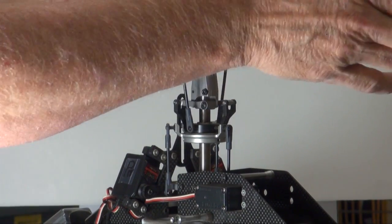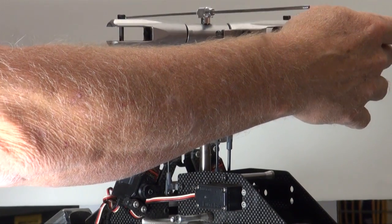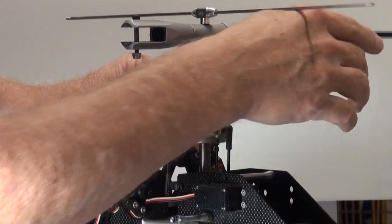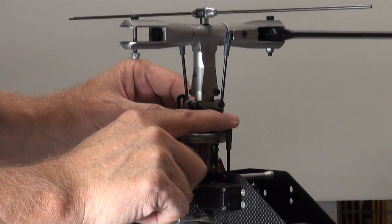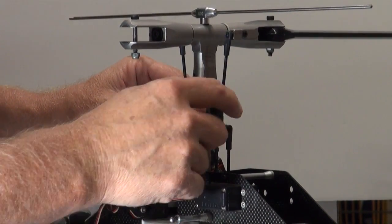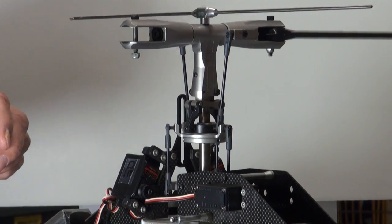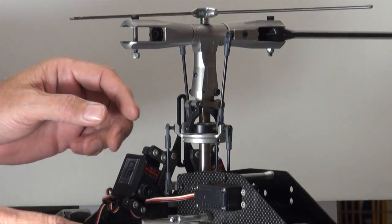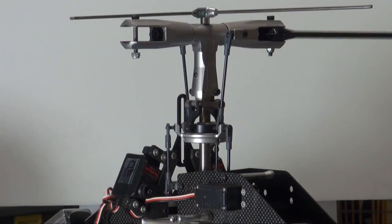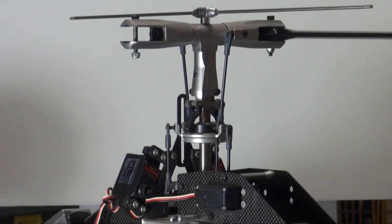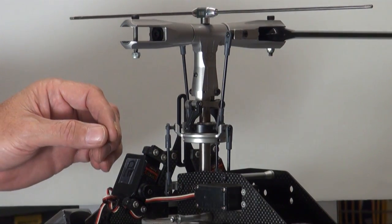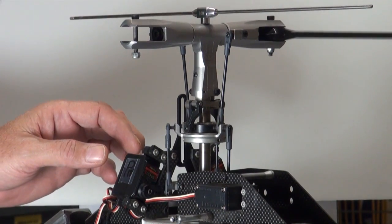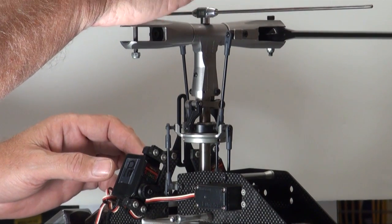Now we're going to move the swash plate, or we're going to move the head until that pitch arm lines up with another servo. It doesn't matter which one, but another servo. And you use your rudder stick on the BeastX. You're going to use the rudder stick and select that servo. Now, without touching the pitch gauge, you're going to use the elevator to adjust that servo so the top of the pitch gauge lines up with the fly bar. Make sense?